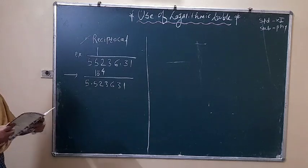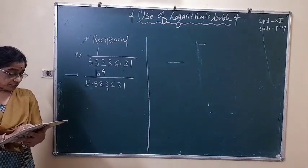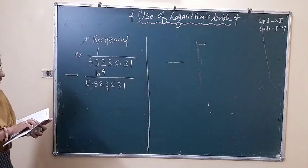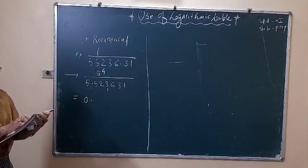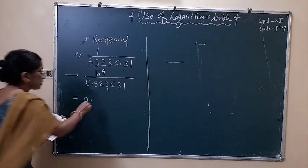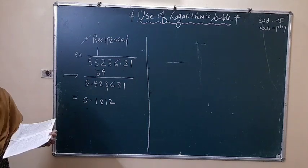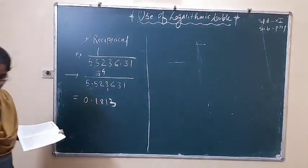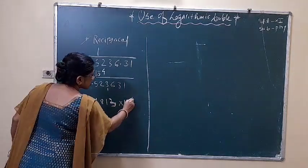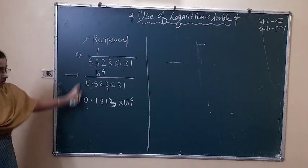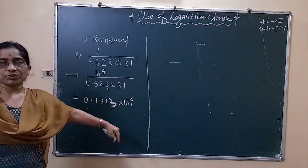See the reciprocal of 5.5, and mean difference in 4. Characteristic 0. 5.5 gives 1, 8, 1, 2 and mean difference in 4 is 1. So it becomes 0.1813. And carry this times 10 raised to minus 4 directly. Lecture is over. Directly, how can we find reciprocal and square root.